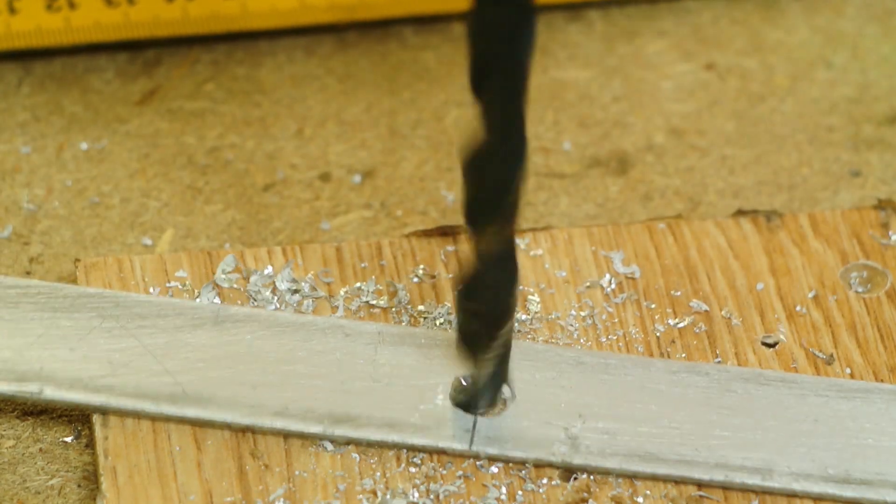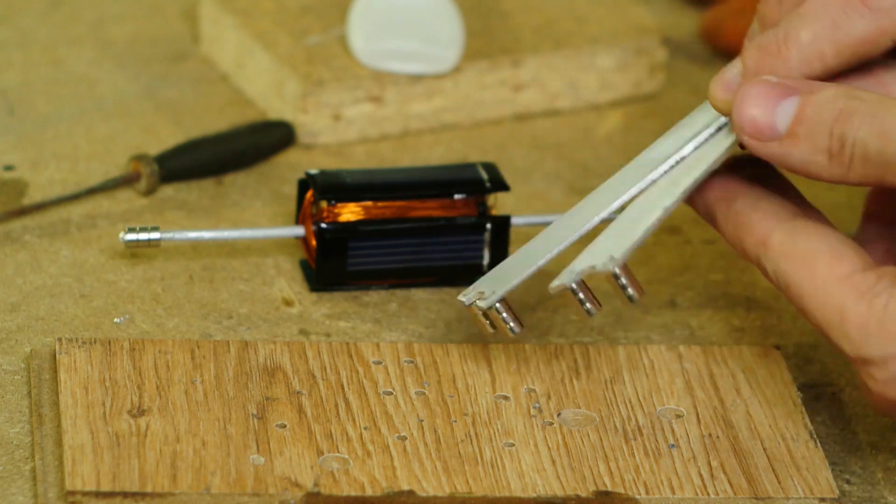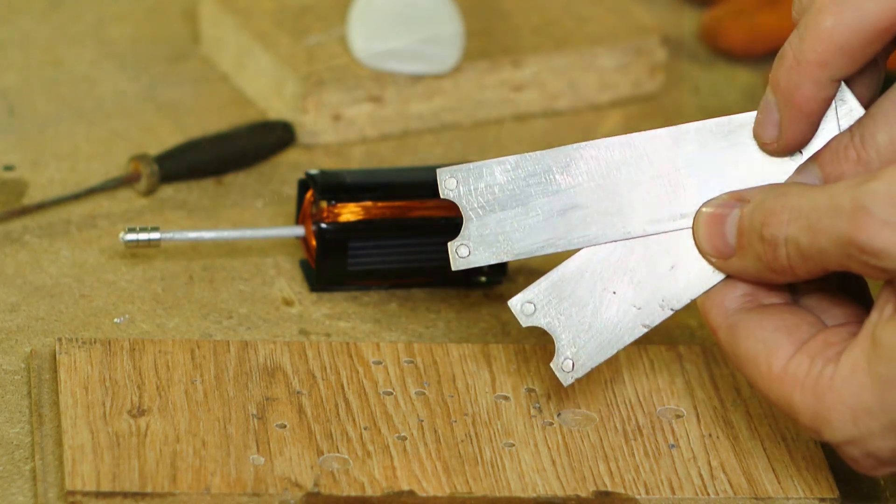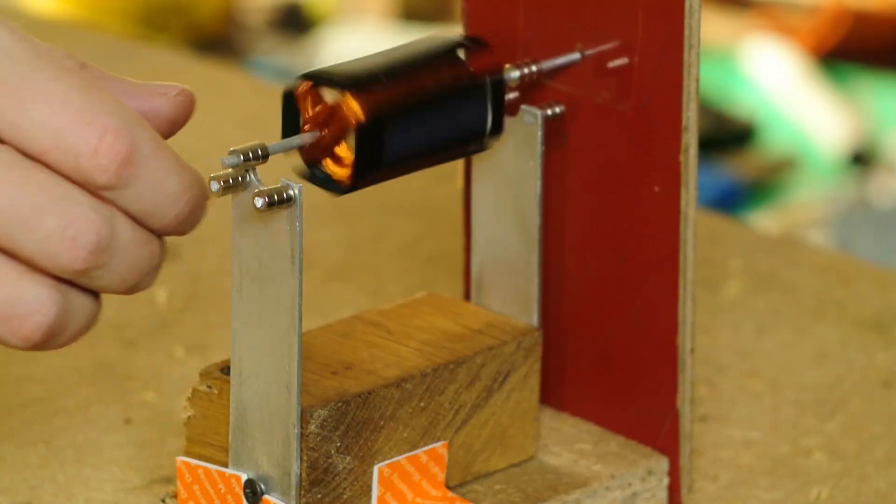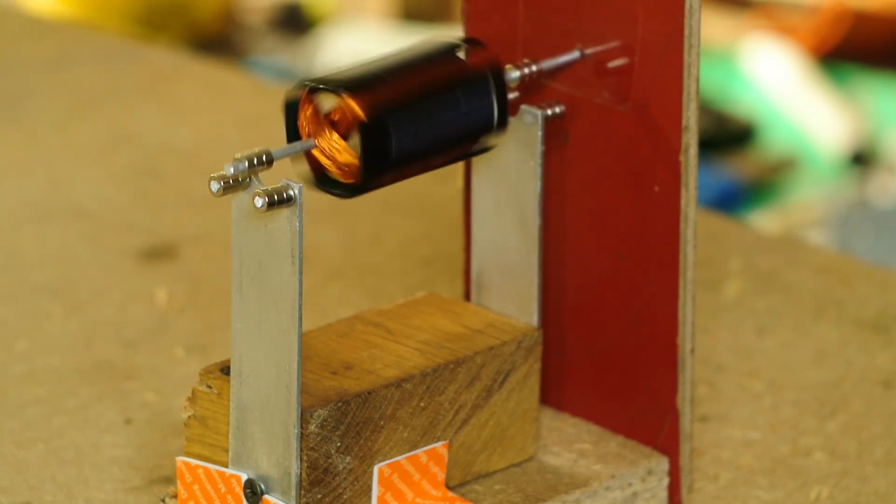We can make aluminum cantilever brackets if we know the interval. At this experimental stand, I found the interval between the cantilever brackets, tailstock, and magnets.